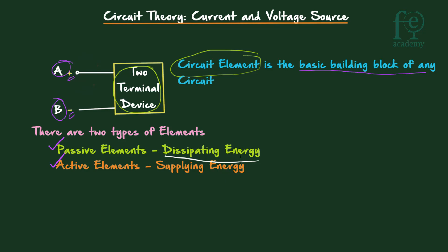Passive elements will always dissipate the energy — they are absorbing the energy. The best example is a resistor, because when we connect a resistor across a voltage source, heat is dissipated. It is absorbing the energy from the energy source. Active elements, on the other hand, are supplying the energy.